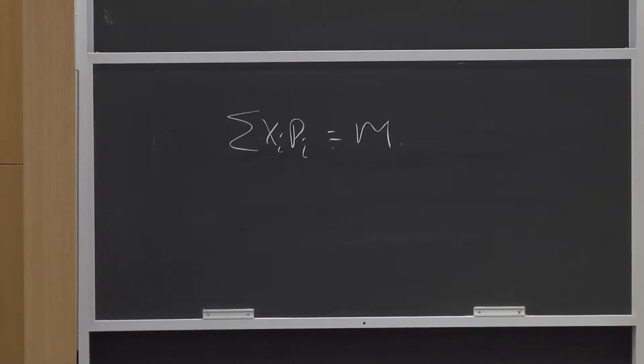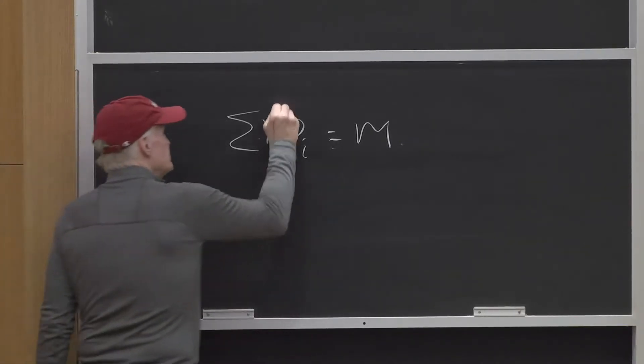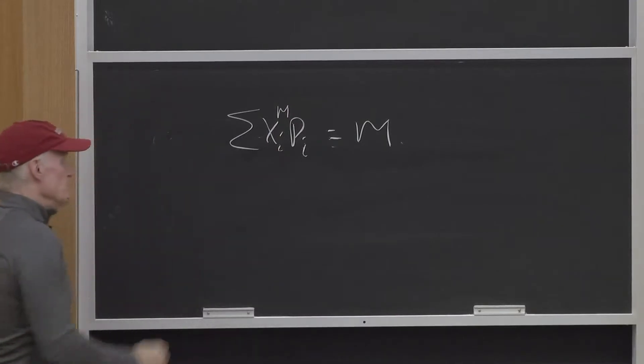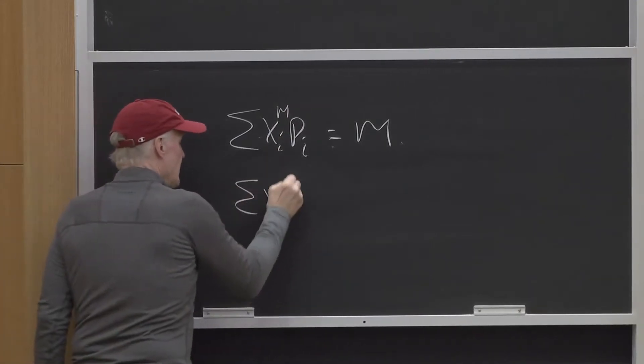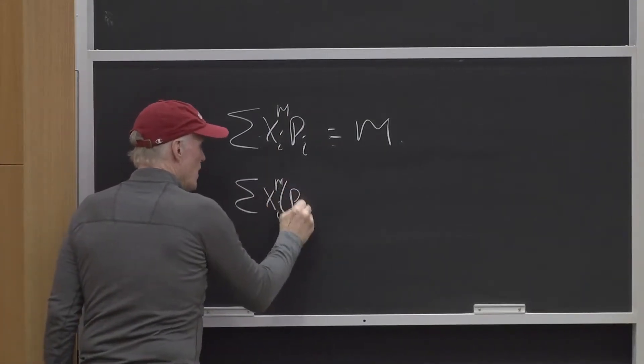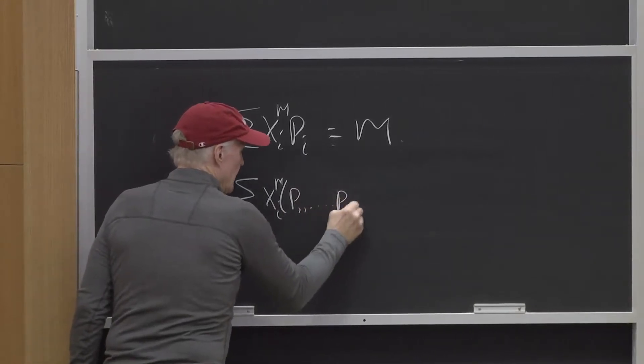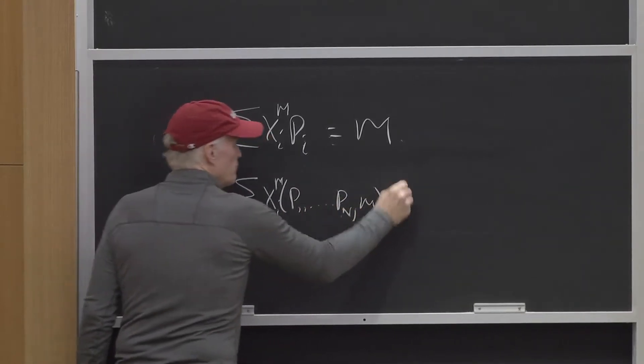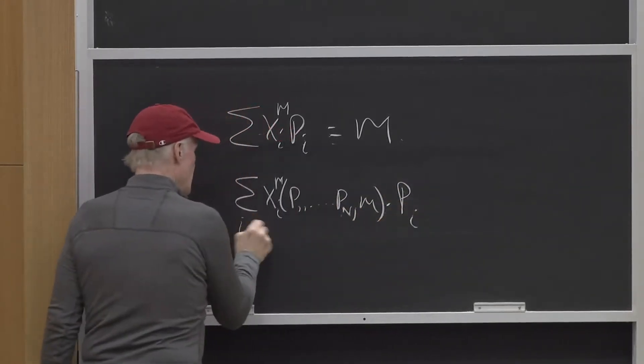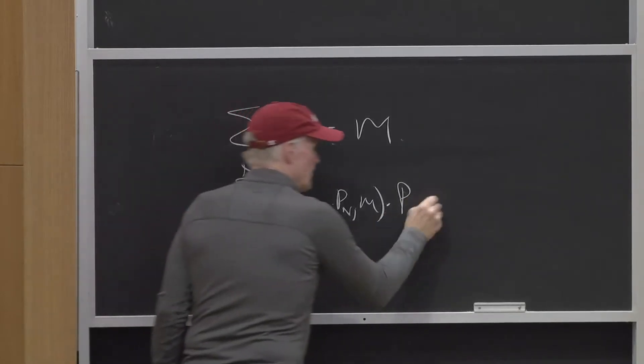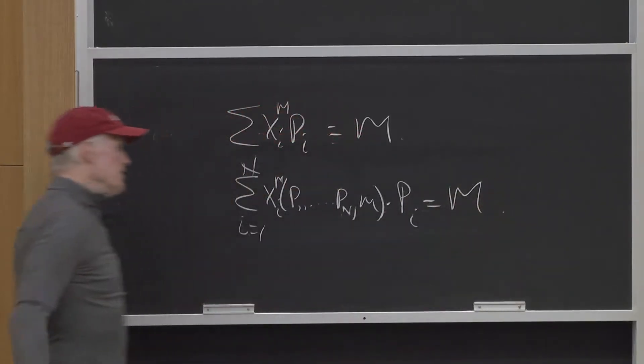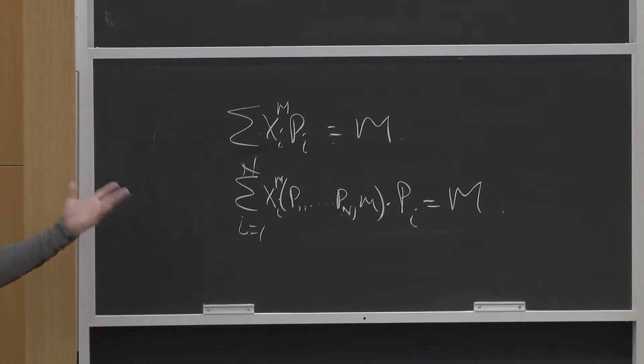So now, that has to be true for the Marshallian demand system. So the sum of xi of p1 up to pn, m, times pi, i equals 1 to n, has to be equal to m. So the Marshallian demand system, whatever that is, has to satisfy the budget constraint.